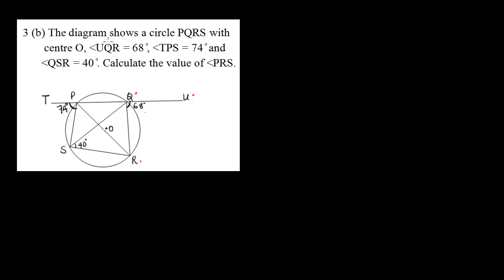The diagram shows a circle PQRS with center O. The angle UQR is 68 degrees, the angle TPS is equal to 74 degrees — that's the angle at the middle P — and the angle QSR is 40 degrees, which is the angle at the middle S.